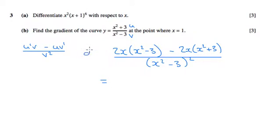Now if we tidy that up, we're going to get 2x cubed, take away 6x, take away 2x cubed, take away another 6x.